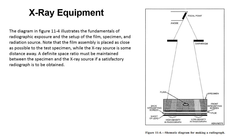The diagram in figure 11.4 illustrates the fundamentals of radiographic exposure and the setup of the film, specimen, and radiation source. Note that the film assembly is placed as close as possible to the test specimen, while the X-ray source is some distance away. A definite space ratio must be maintained between the specimen and the X-ray source if a satisfactory radiograph is to be obtained.